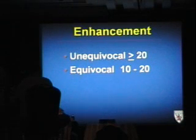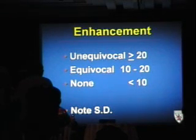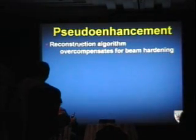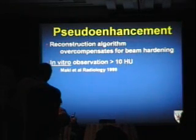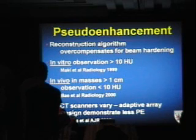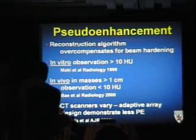Unequivocal enhancement is 20 HU, equivocal is 10–20, less than 10 is no enhancement. There's no strict science — use your machine's experience and standard deviations. False enhancement can be due to image noise, partial volume averaging, or pseudo-enhancement. Pseudo-enhancement is due to the reconstruction algorithm overcompensating for beam hardening — it's been shown in vitro and in vivo for masses over 1 cm and varies between scanners. Using 30 grams of iodine as at the Brigham reduces this problem because the bright renal background is less intense.